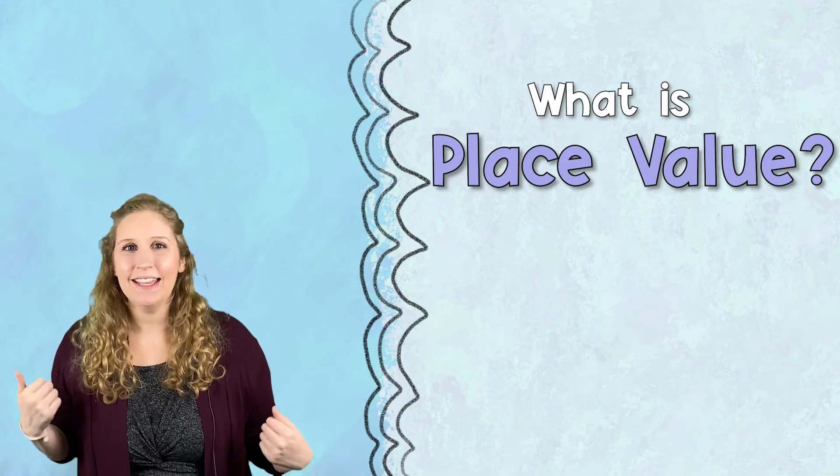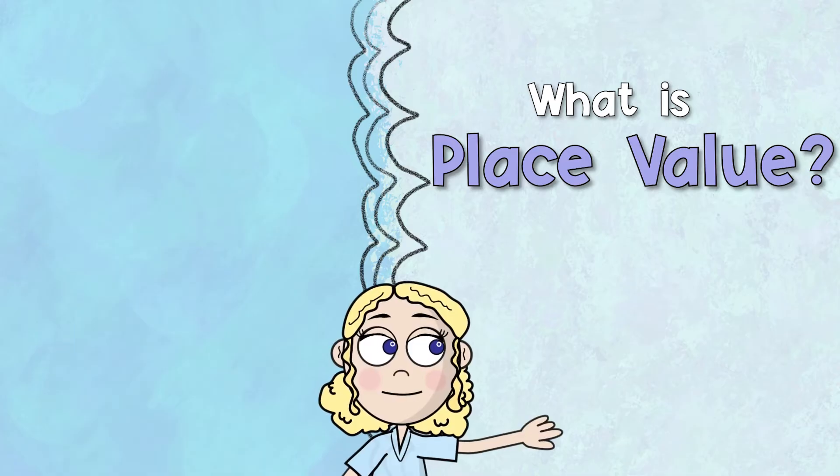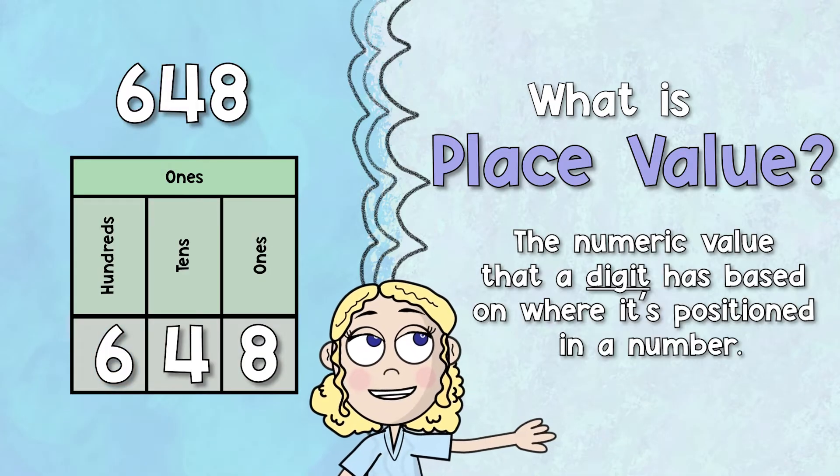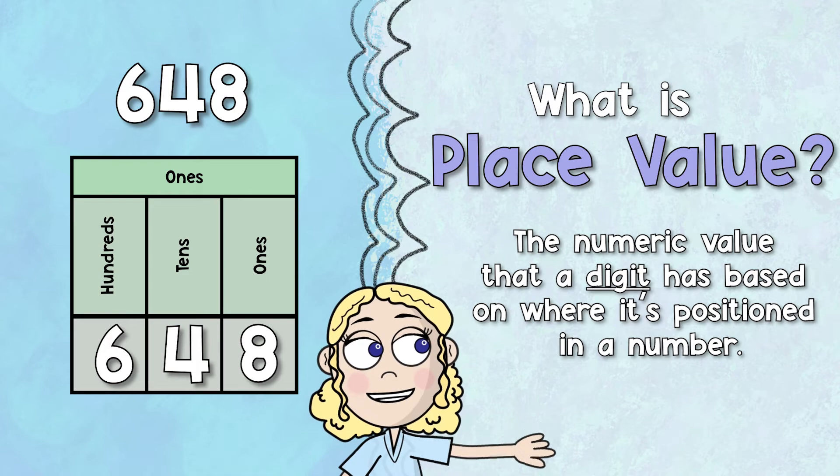All right, so what exactly is place value? Place value is the numeric value that a digit has based on where it is positioned in a number.